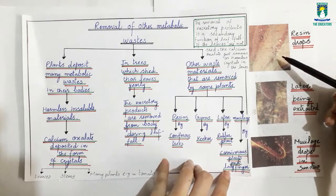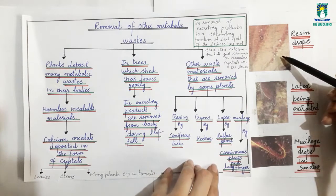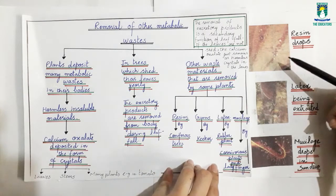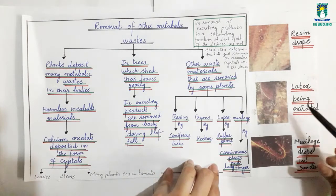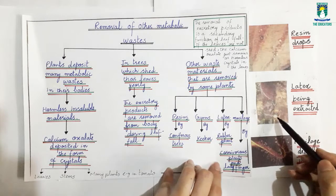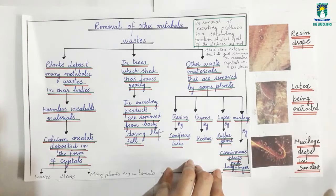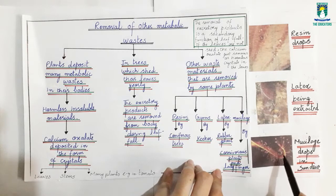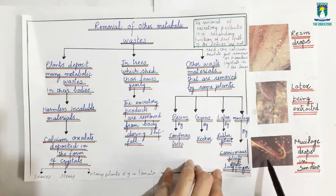As you can see in the diagram, these are resin drops in coniferous trees. This is the latex material — a milky fluid extracted from the rubber plant and used in rubber manufacturing. Then there is mucilage, shown on the carnivorous plant, which is used to trap insects.